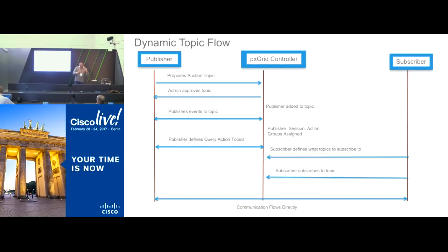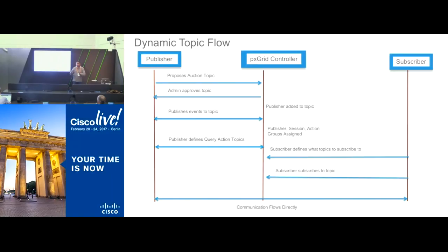The bidder is going to subscribe to the auction topic, as well as the watcher. The publisher of the information is going to specify the information it wants to publish — in this case the inventory data and the bidding data in real time. The publisher is also going to say the subscribers subscribing to this topic can query for real-time inventory status or details of a particular product. And the publisher is going to say it will entertain actions such as a bid request from an authorization group called bidder and nothing else. The publisher determines the attributes it wants to publish, the queries it can support, and the actions the subscribers can take.